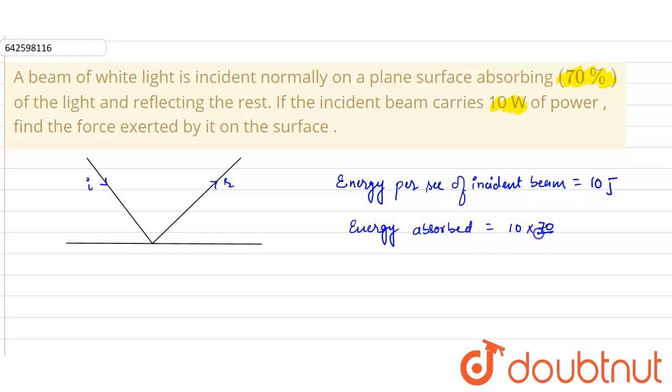So the energy reflected will be equals to the total incident energy minus the absorbed energy, so it will be 3 joules. So what we can say is the energy incident is 10 joules and the energy reflected is 3 joules.